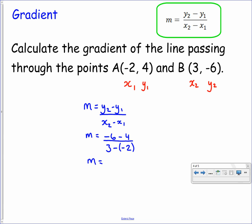Now it's just a matter of working this out. On the top we have negative 6 take away 4 which leaves us with negative 10. On the bottom, 3 take away negative 2. That double negative appearing here tells us we have to add these together. So we have negative 10 over 5. Finally, negative 10 divided by 5 gives us negative 2.